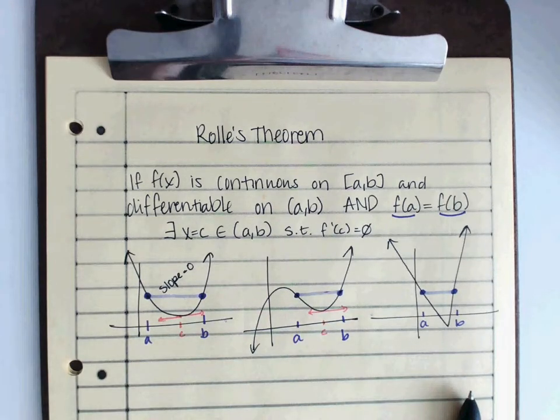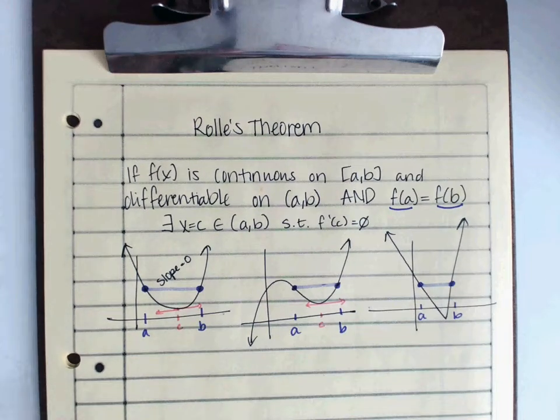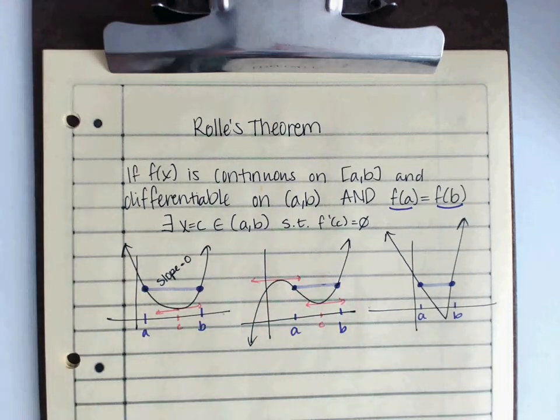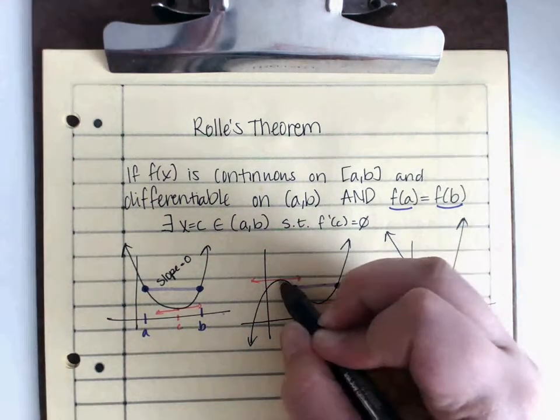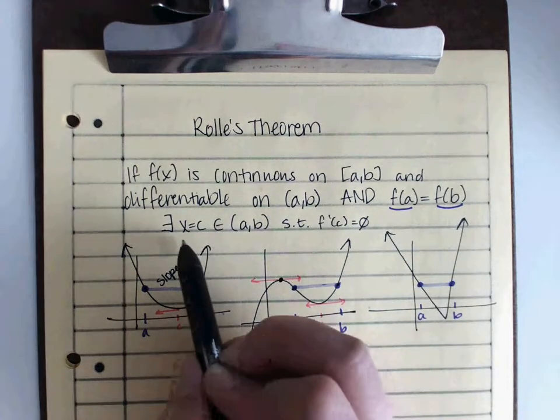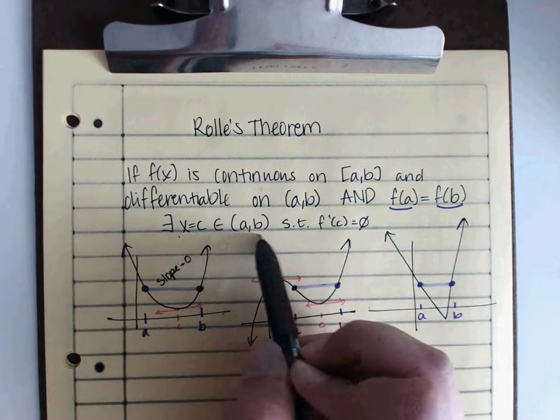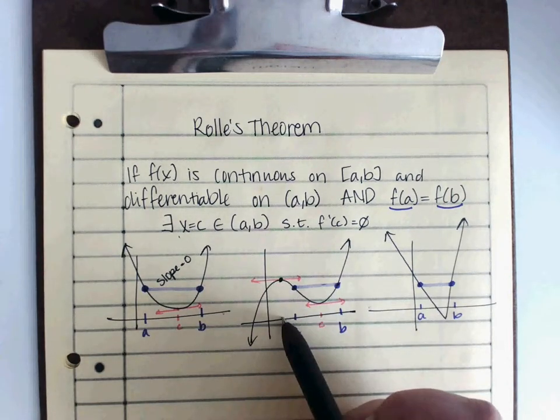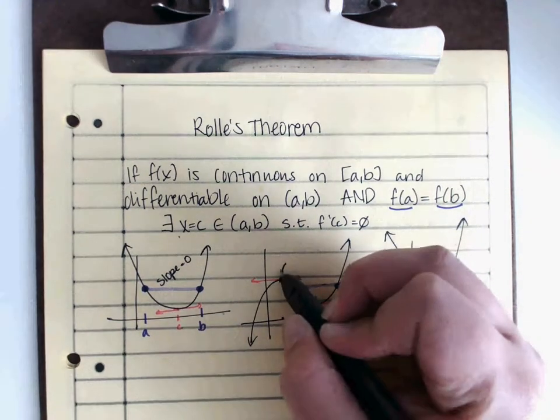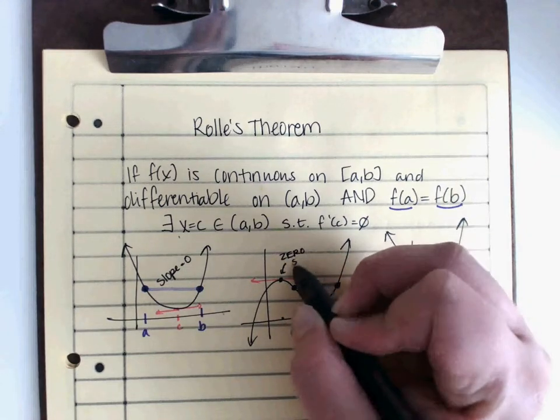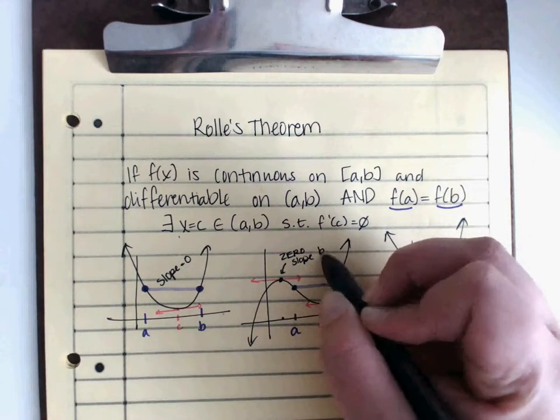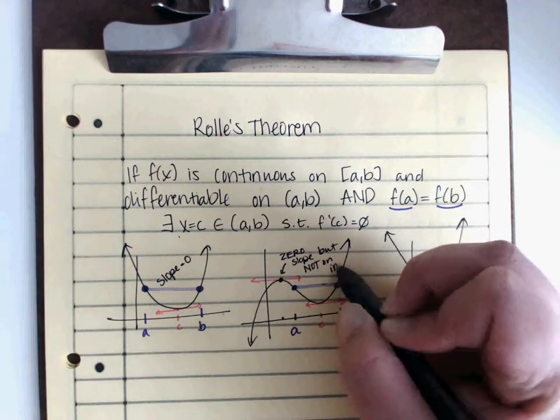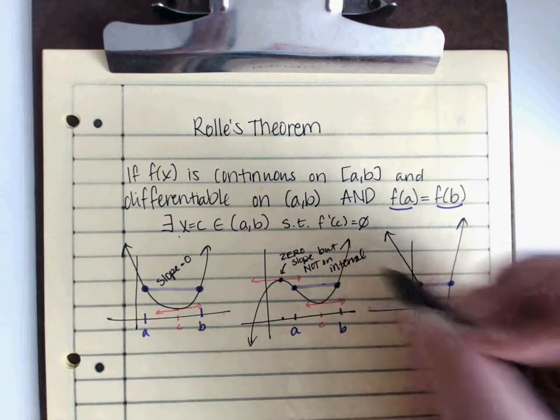Now, if you notice on our cubic graph, there's actually another place where it's flat across. But this value could not be my c, because remember, c needs to be within the interval from a to b. And so, if I tried to put c out here, that is not going to work. So, it also has a zero slope, but it's not on the interval.